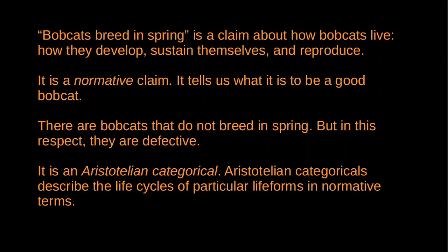Foot calls such claims Aristotelian categoricals. Aristotelian categoricals describe the life cycles of species in normative terms. In general, an Aristotelian categorical is going to tell us how some living thing in a particular environment develops and sustains itself and reproduces. This requires distinguishing a good instance of the kind from defective instances of the kind. The normativity is built into the Aristotelian categorical. This is why the Aristotelian categorical can be true even in circumstances when very few or even none of the species in question behave as it describes.